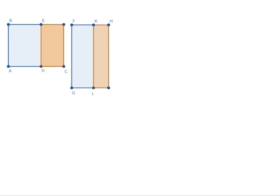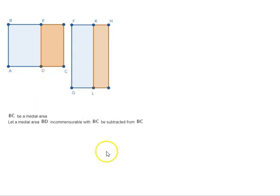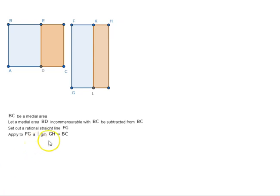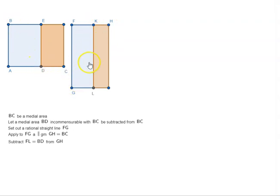Let's see how we can prove this. Let BC be a medial area and let a medial area BD, which is incommensurable with BC, be subtracted from BC. We set out the rational straight line FG and apply to FG a parallelogram GH equal to BC, and subtract FL equal to BD from GH. So BC and BD are medial, applied to rational straight line FG, and BC and BD are incommensurable.